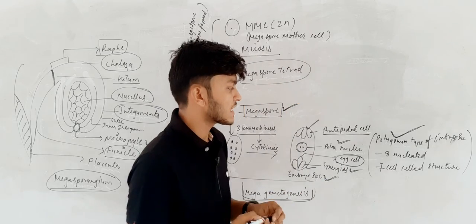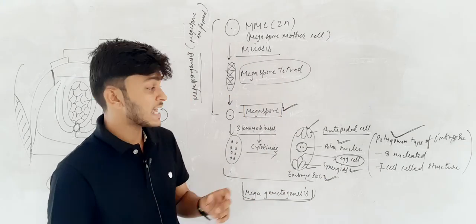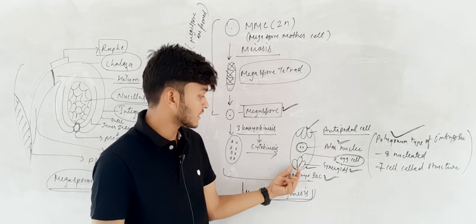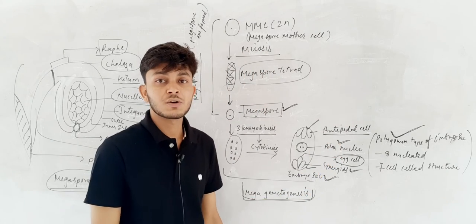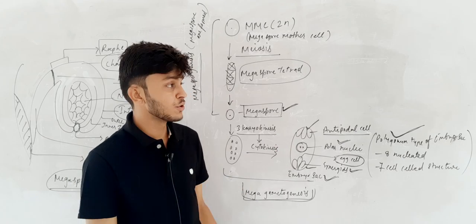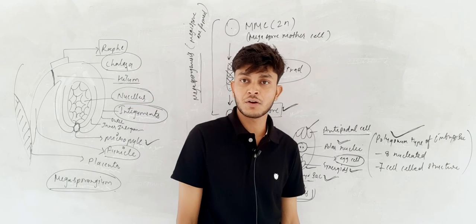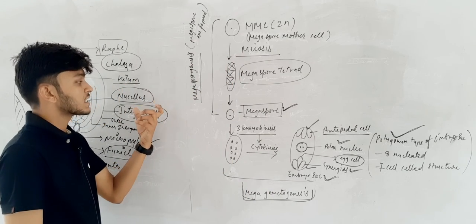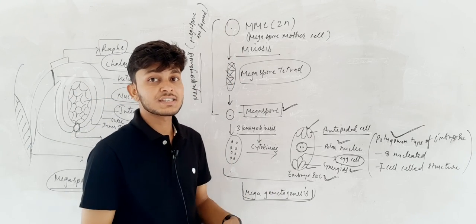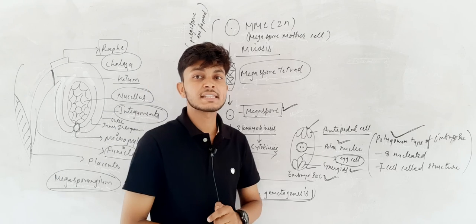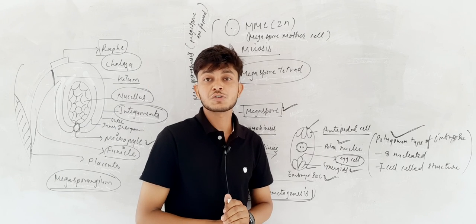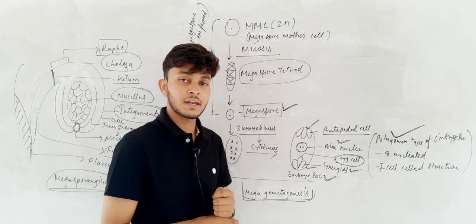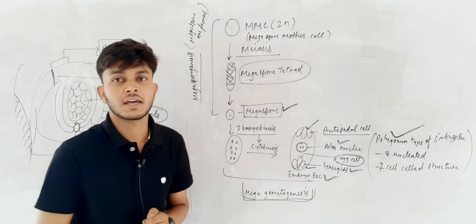In the Polygonum type of embryo sac, the three upper cells are antipodal cells, the cells on the side are synergids, and the central cell is the egg cell. The two nuclei that fuse together are called polar nuclei. That is all about megasporogenesis and megagametogenesis. In the next lecture we will talk about the structure and types of ovules. I hope you have understood. Thanks.